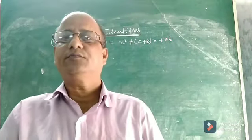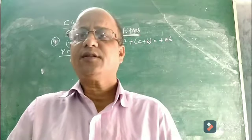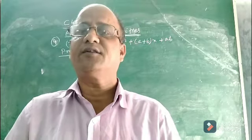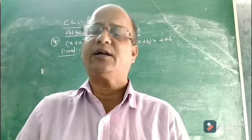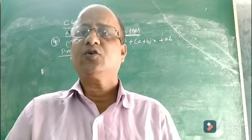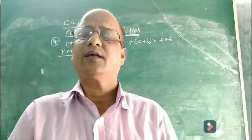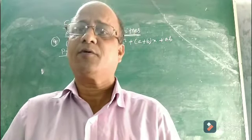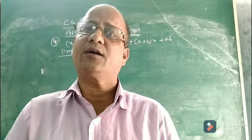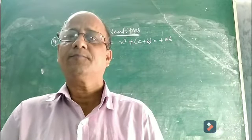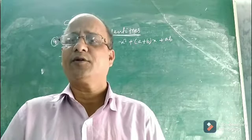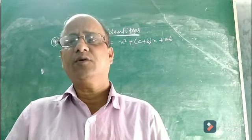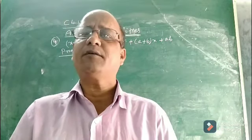Good morning to all of you. Children, in the previous class we were discussing different algebraic identities. I discussed three main identities: a plus b whole square, a minus b whole square, and a square minus b square. Now there are two more identities left as per your syllabus, so let us complete these two identities and then discuss their applications.